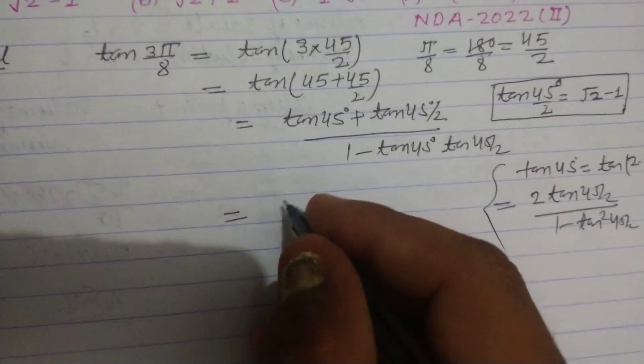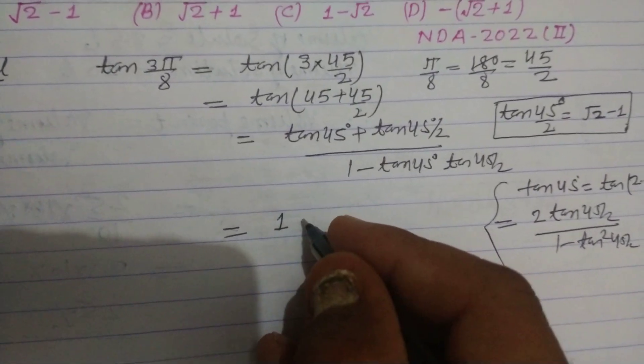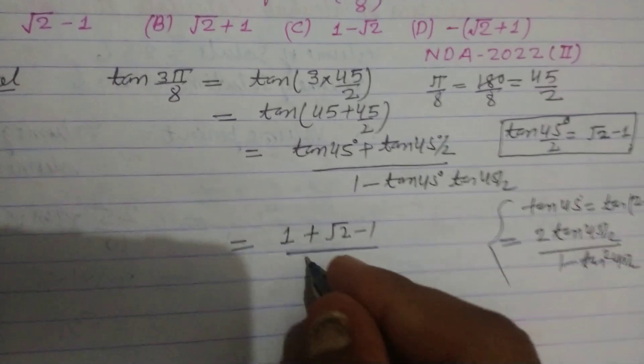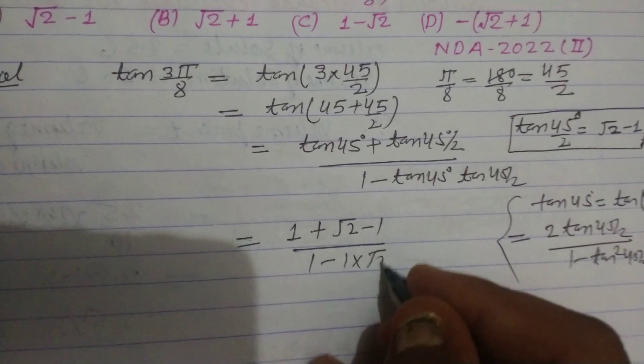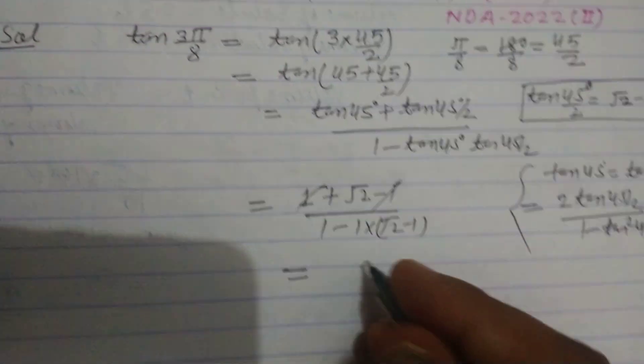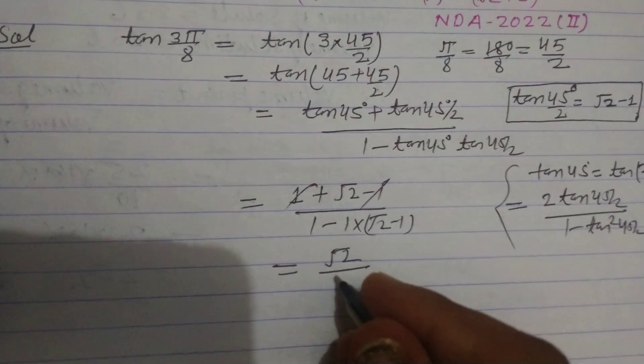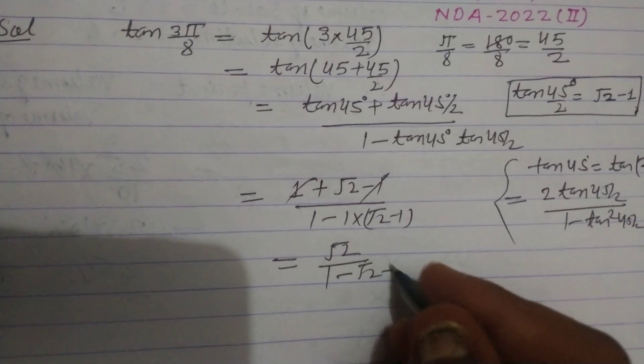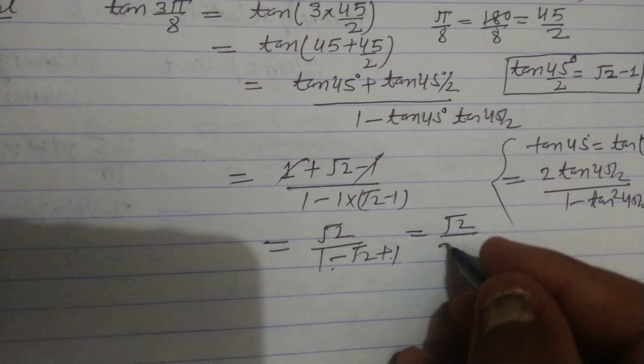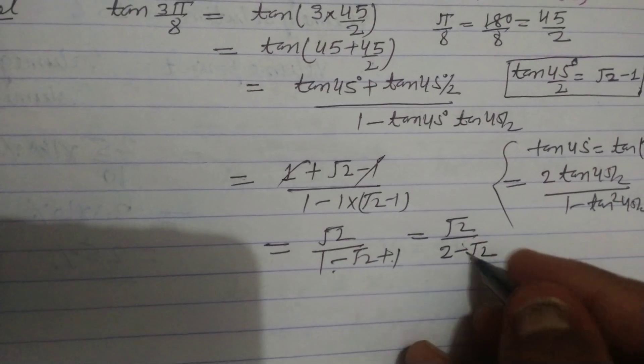Putting these values: tan(45°) is 1, so we have 1 + (√2 - 1) over 1 - 1×(√2 - 1). The 1s cancel and we get √2 upon 1 - √2 + 1, which is √2 over 2 - √2.